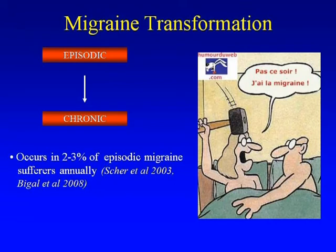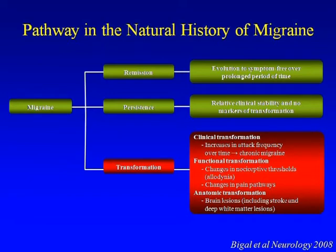Unfortunately, if this situation occurs on 15 or more days, people transform to chronic migraine. This occurs in approximately 2 to 3 percent of migraineurs annually. Dr. Bigal from Albert Einstein College of Medicine proposed a model based on epidemiological and clinical data showing migraineurs can have three pathways: remission in 3 to 9 percent, persistence unchanged in 70 percent or more, or transformation in 2 to 3 percent.